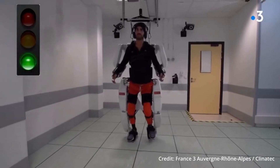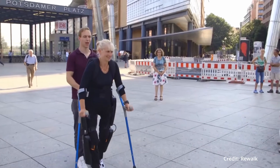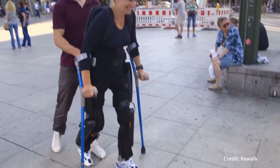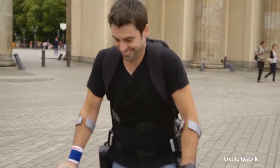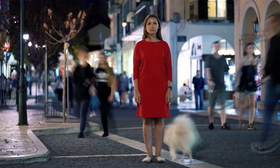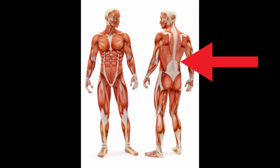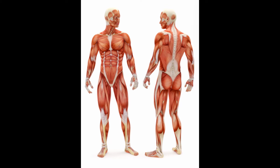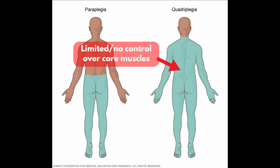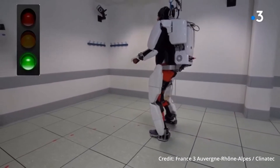An additional challenge we have to face is balance. If you notice in the video of the quadriplegic person and his exoskeleton, there is a ceiling-mounted harness keeping the exoskeleton in place — so it is not a fully autonomous system, unlike exoskeletons for paraplegics. Even paraplegic exoskeletons still require crutches to maintain balance. When it comes to activities like walking, or even just standing still, it's not just about the leg muscles — it's also about the core muscles: the abs, obliques, back muscles, and others that are constantly active when we're standing up. People affected by paraplegia or tetraplegia have limited or no control over these muscles, making balance a very complex challenge that future exoskeletons for quadriplegics will have to overcome.